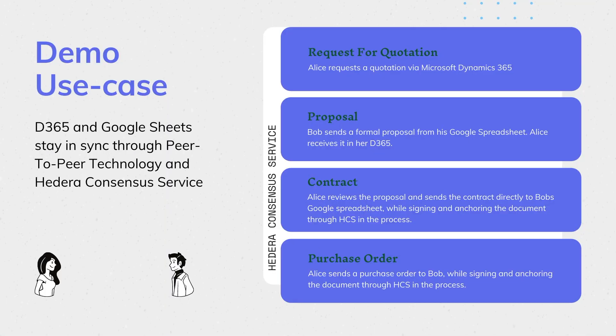Alice is in need of HDMI cables and has found Bob. You will see how Alice and Bob's records can stay in sync despite Bob not using a sophisticated ERP system. The system is powered by the Hedera Consensus Service, and the privacy of the communication between the two companies will be maintained through the use of peer-to-peer technology.